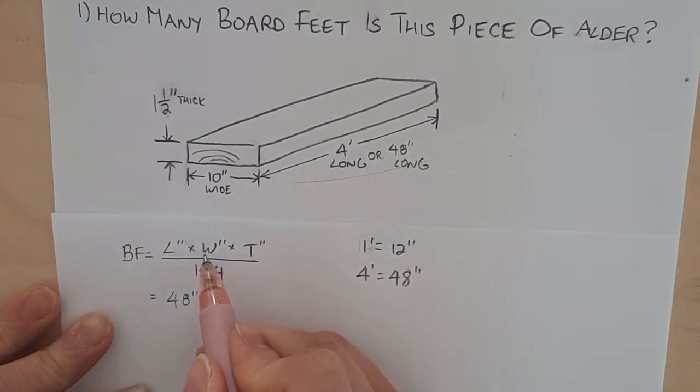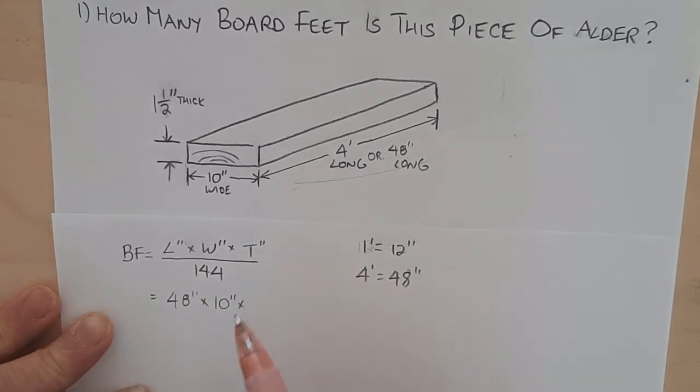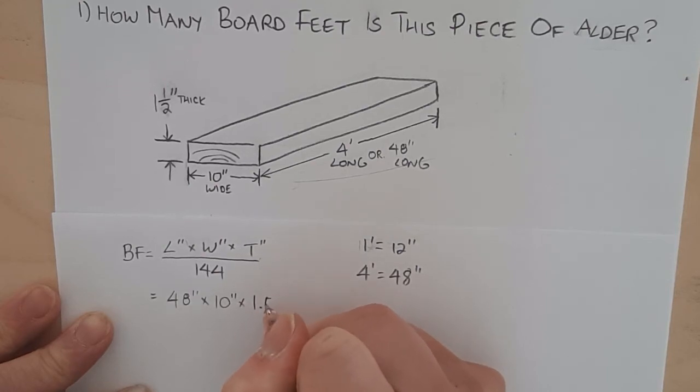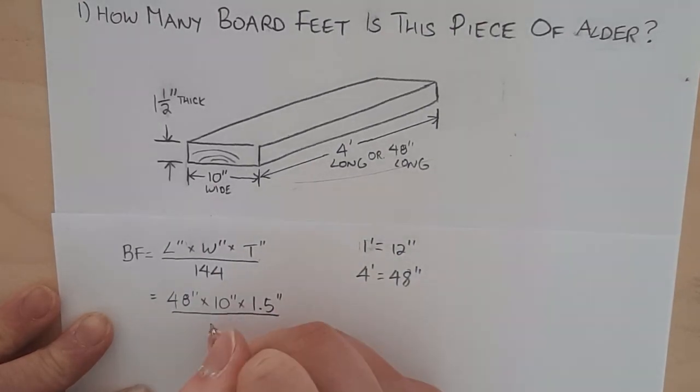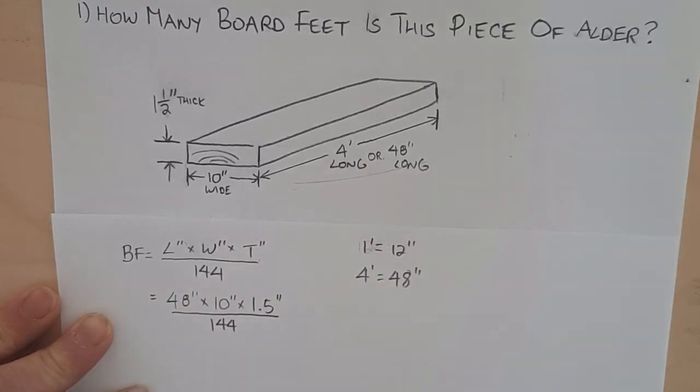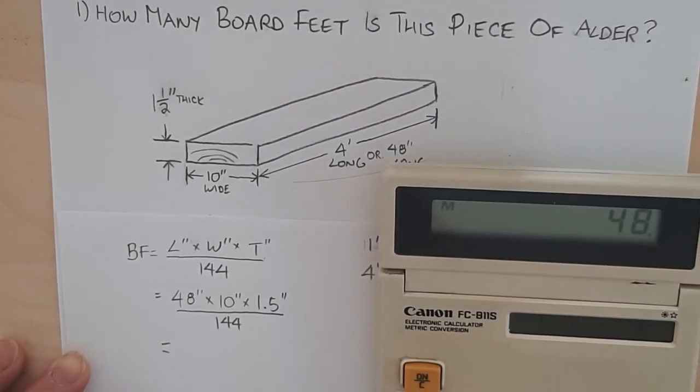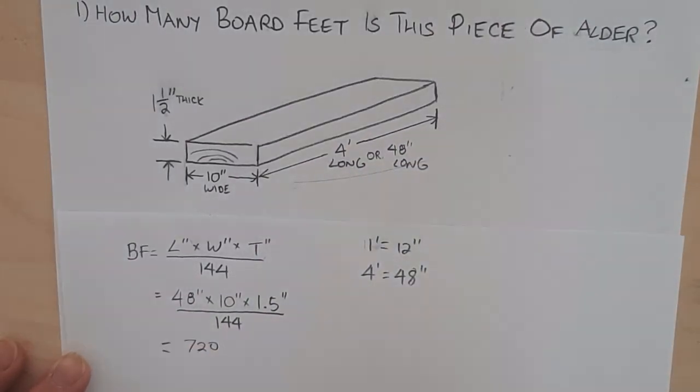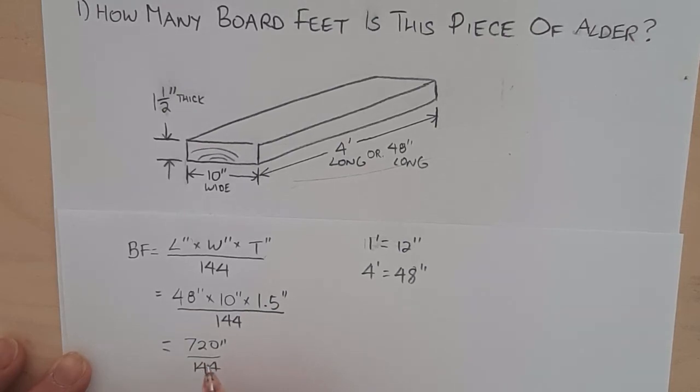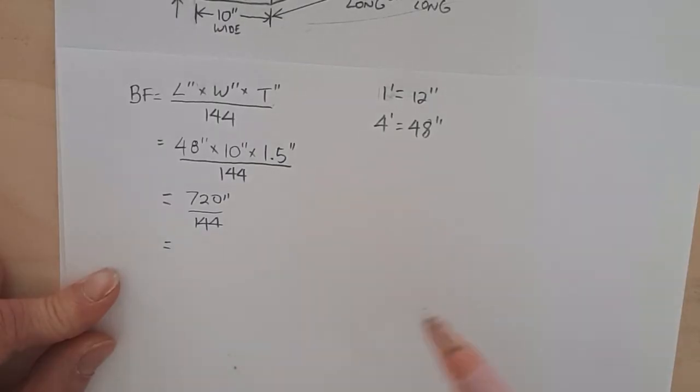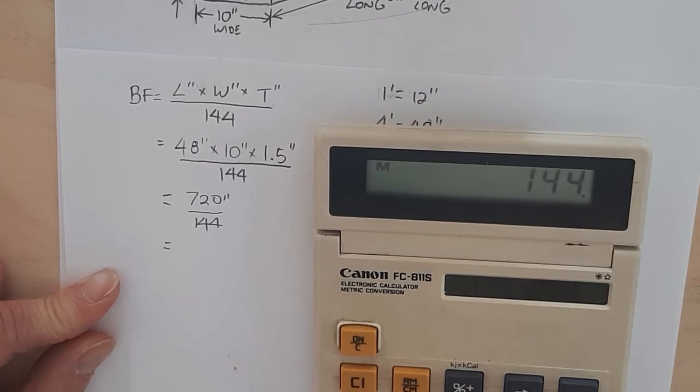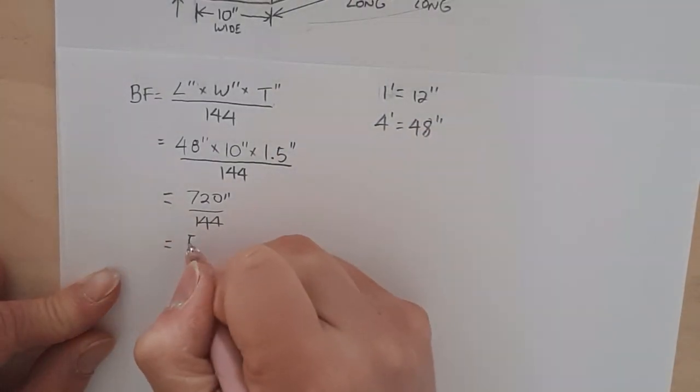Now I need to put the width in. So that's 10 inches wide. And now I add my thickness. So that's one and a half or 1.5 inches. And you divide that all by 144. So 48 times 10 times 1.5 is 720. Now I'm going to go ahead and divide that. So now I'm going to go ahead and divide 720 by 144. And that gives me five.